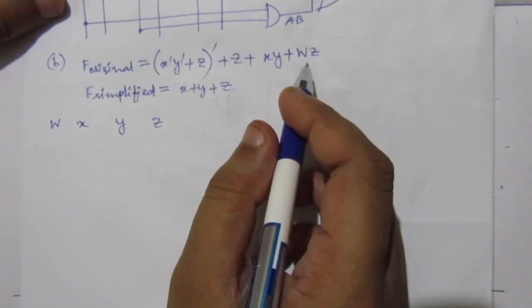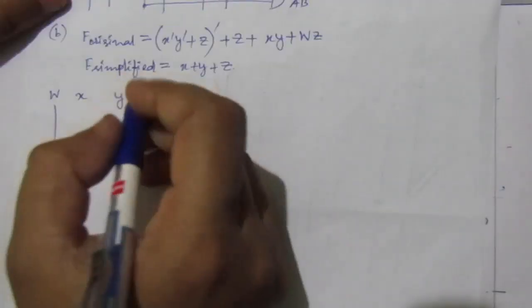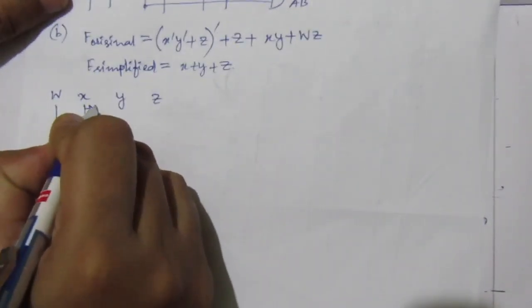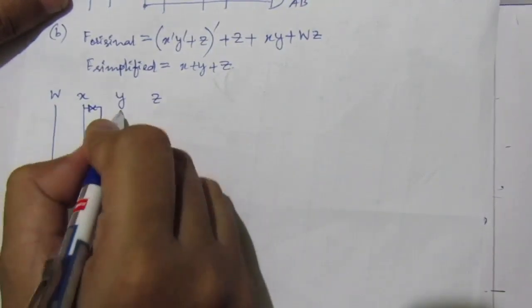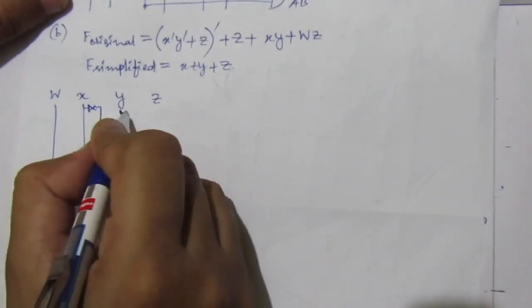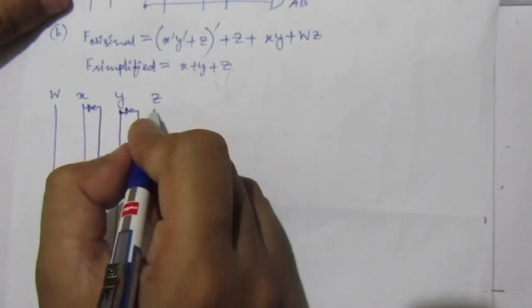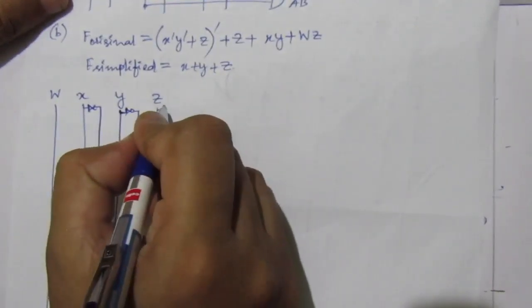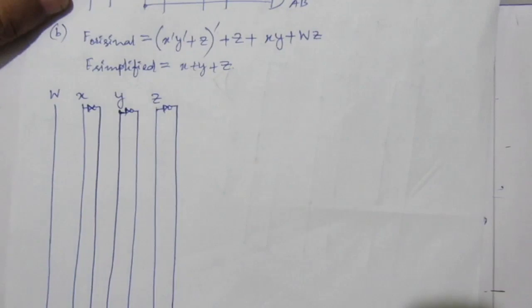Draw the w line as it is. Then for x, use an inverter to get x̄. Then for y, use an inverter to get ȳ. And for z, use an inverter to get z̄. Now let us draw the logic diagram for f original.